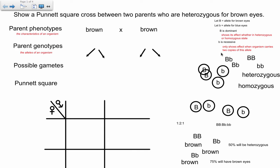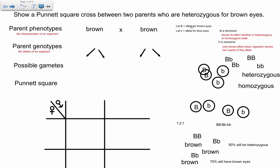I'm not worried about which is male and which is female because this type of cross is not sex-linked, so the sex chromosomes are not involved. Now I need to figure out the genotypes — if someone asks your genotype, you can't say 'brown'; they're asking for a specific sequence of letters. Let big B equal the allele for brown eyes and little b equal the allele for blue eyes. Since the question tells me they're both heterozygous, they must both be big B, little b.